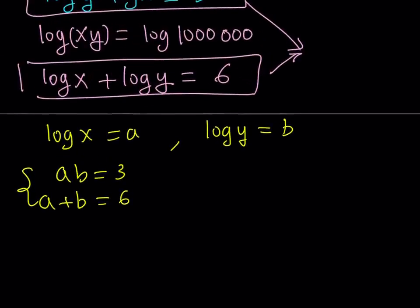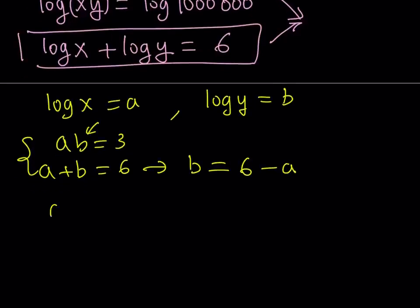Let's go ahead and find the values from here. What am I going to do? Well, I can just, let's isolate b, 6 minus a, and then plug into the first one. So I get a times 6 minus a is equal to 3.